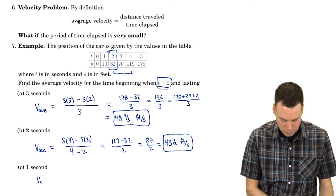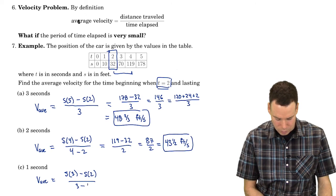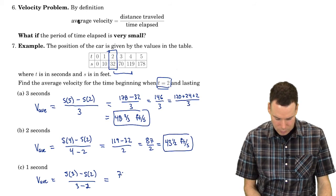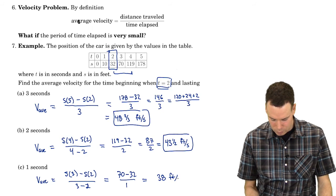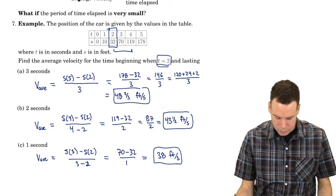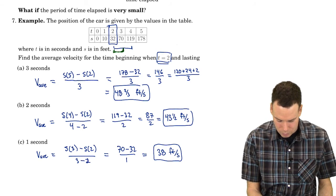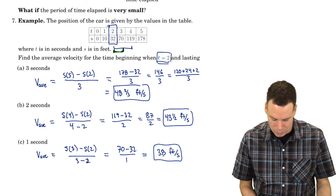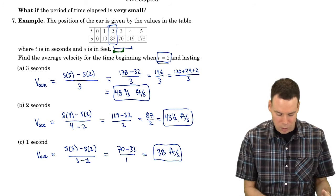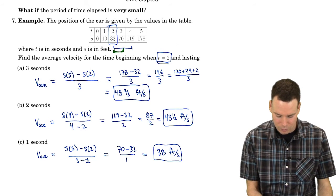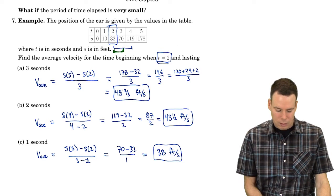What about starting at time 2 and looking at just a 1-second interval? That's s(3) minus s(2), all over 3 minus 2, which is 70 minus 32 over 1, or 38 feet per second. So over the 1-second interval the average velocity was 38 feet per second. Over the 2-second interval it was 43 and a half, and over 3 seconds it was 48 and 2 thirds. The car is actually speeding up — it's accelerating.